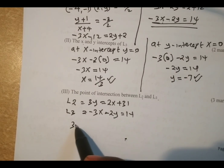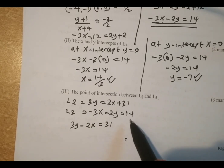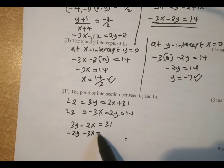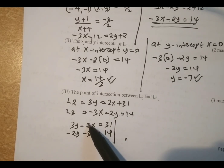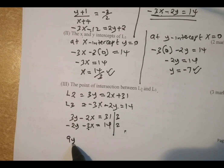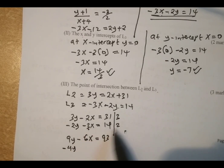Rearranging L2: moving 2x to the other side gives negative 2x plus 3y equals 31. L3 can be written as negative 2y minus 3x equals 14. To eliminate x, we multiply equation 1 by 3 and equation 2 by 2. This gives: 9y minus 6x equals 93, and minus 4y minus 6x equals 28.